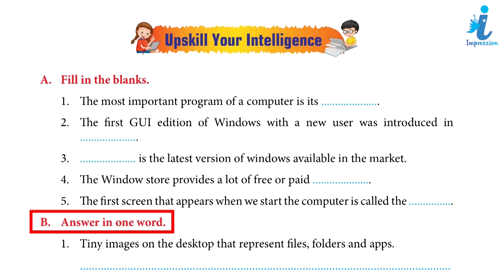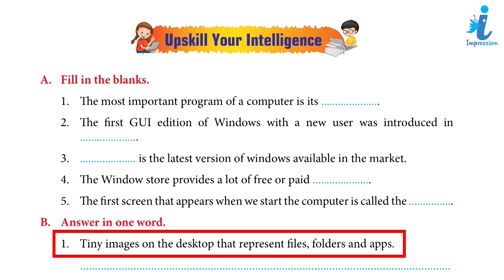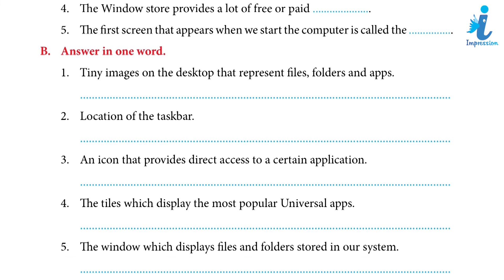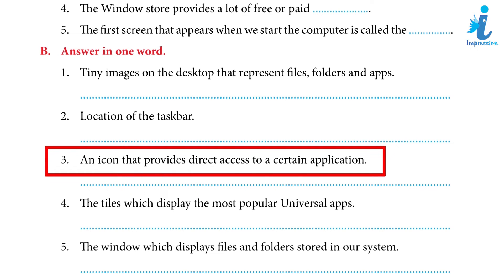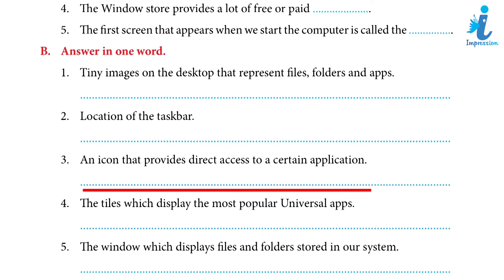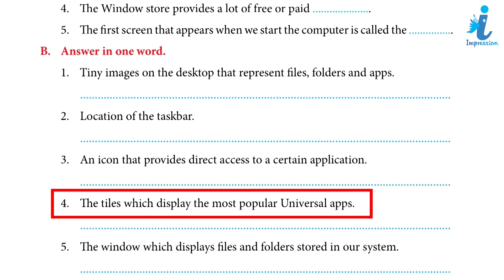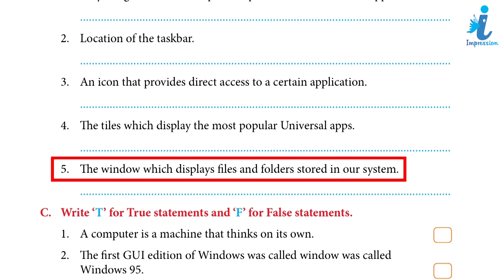Answer in One Word: 1. Tiny images on the desktop that represent files, folders and apps — Icons. 2. Location of the taskbar — Desktop's bottom. 3. An icon that provides direct access to a certain application — Shortcut icon. 4. The tiles which display the most popular universal apps — Live Tiles. 5. The window which displays files or folders stored in our system — File Explorer window.